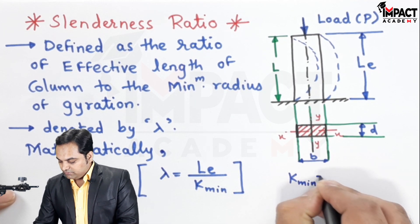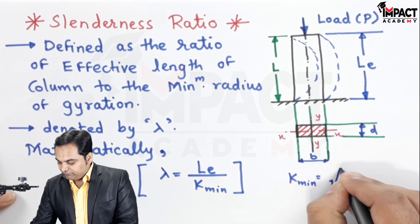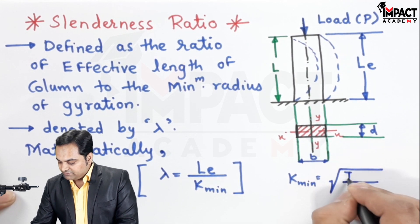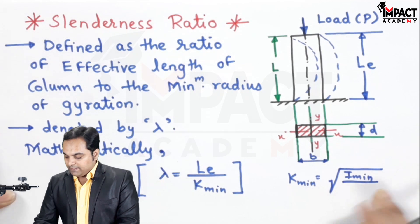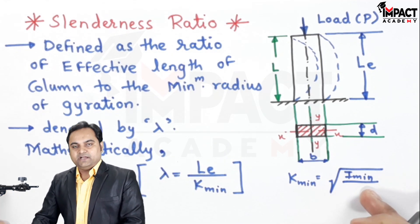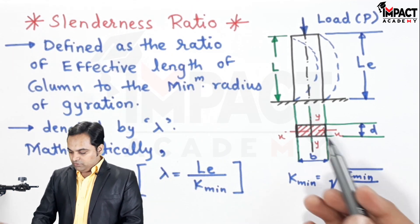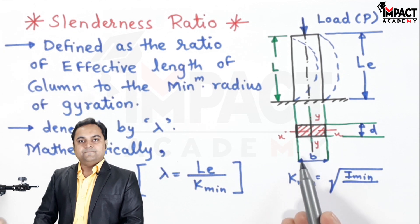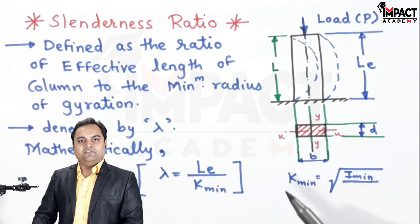This minimum radius of gyration is given by the formula: it is the root of I minimum. I minimum is the minimum moment of inertia, and minimum moment of inertia is the least of the two values from IXX and IYY. If we calculate IXX and IYY, the minimum value has to be selected.